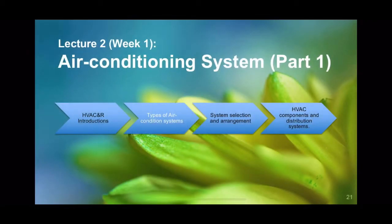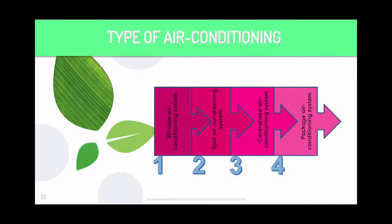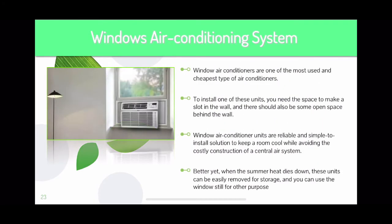There are a few types of air conditioning systems: number one is window air conditioning system, number two is split air conditioning system, number three is centralized air conditioning system, and number four is package air conditioning system. Starting with window air conditioning: you may have seen this in very old motels or buildings from the 60s and 70s, where the air conditioner is stuck under a window. The window may be very big but they cut it halfway or quarterly, with the evaporator inside and the condenser outside.